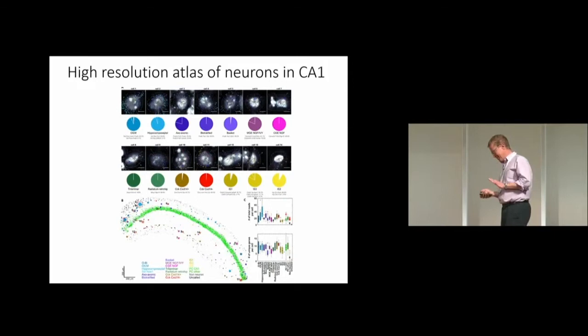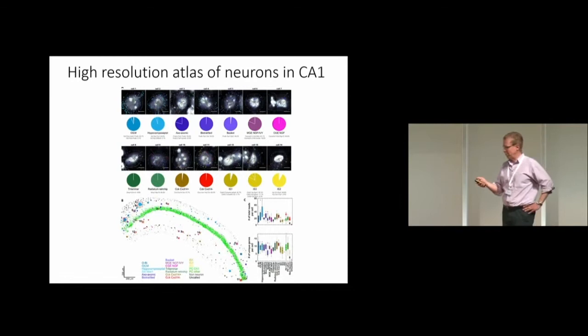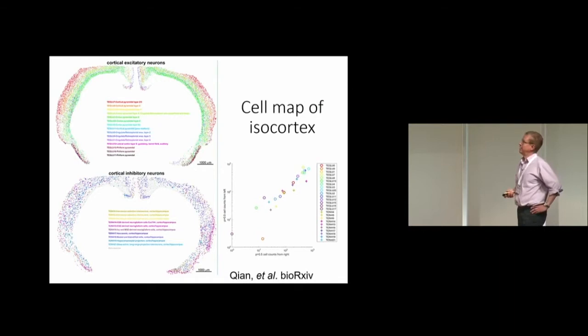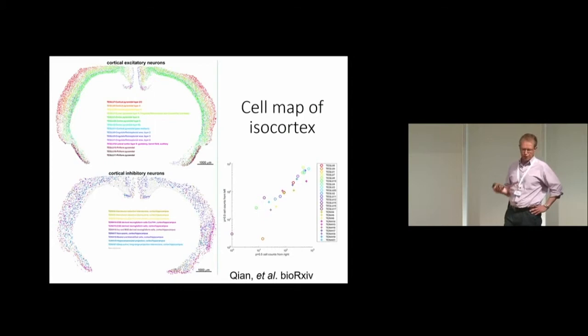We have put a lot of effort into validating this cell map and it looks very accurate. In each cell we find about six or seven marker genes, and this is by design. We then took it further and made maps of all neurons in isocortex — both excitatory and inhibitory neurons. The excitatory neurons form the well-known layers in isocortex, while interneurons have a different kind of distribution. We map very rare cells — a handful of cells per section — up to several thousand cells of certain cell types per section.